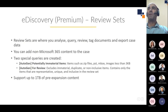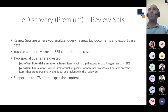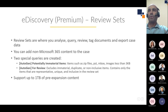Review sets are sets of static documents in the case where you can analyze, query, review, tag, and export case data. You can add non-Microsoft 365 content to the case at this point, but it must be associated with a custodian — for example content from their laptop — and can include Microsoft Office files, container files such as zip files, PSTs, and inbox message files. Two special queries are created when you create a review set: 'potentially immaterial items' such as zip files, PSTs, and images under 3 kilobytes; and a 'for review' query which excludes those immaterial items. The review set supports one terabyte of pre-expansion content.